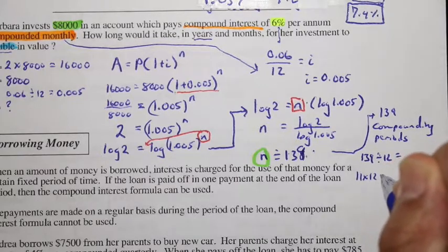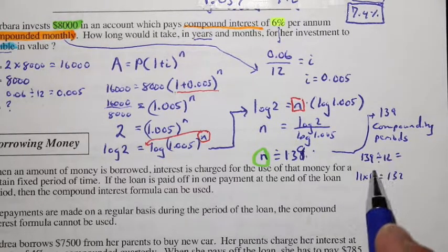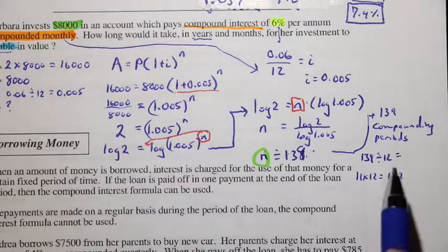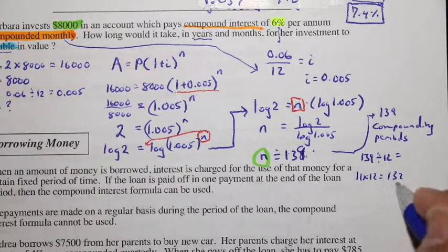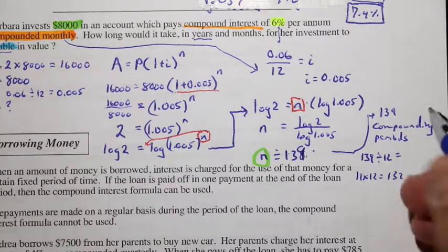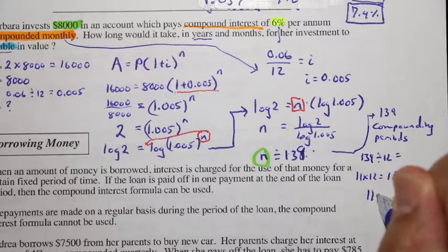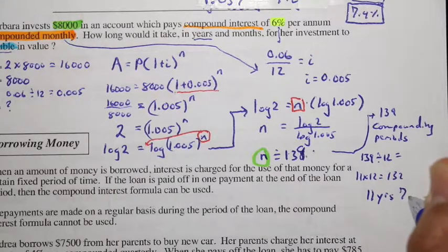11 times 12 is equal to 132. So how many more compounding periods? And these compounding periods equal the number of months, right? Remember, it's compounded monthly. So here, 11 times 12 is 132. And there's 7 more. So we can say this is 11 years and 7 months.